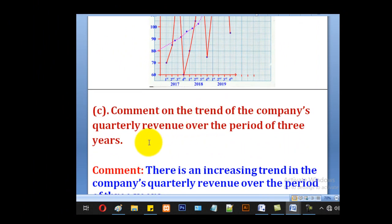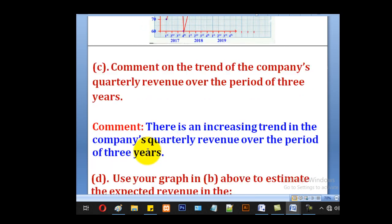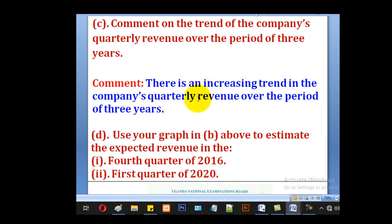Now the next part was comment on the trend of the company's quarterly revenue over the period of three years. We use the trend. This is the trend line. The line for moving averages is the trend line. It is increasing. You can see it has a positive gradient. So there is an increasing trend in the company's quarterly revenue over the period of three years.